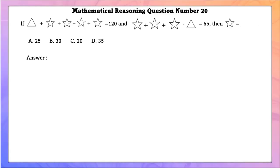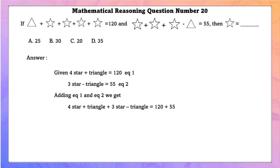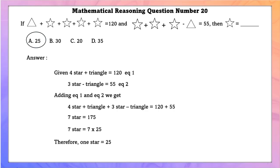Mathematical reasoning question number 20. If triangle + 4 stars = 120 (equation 1) and 3 stars − triangle = 55 (equation 2), then adding both equations: 7 stars = 175, so 1 star = 25. The answer is option A.